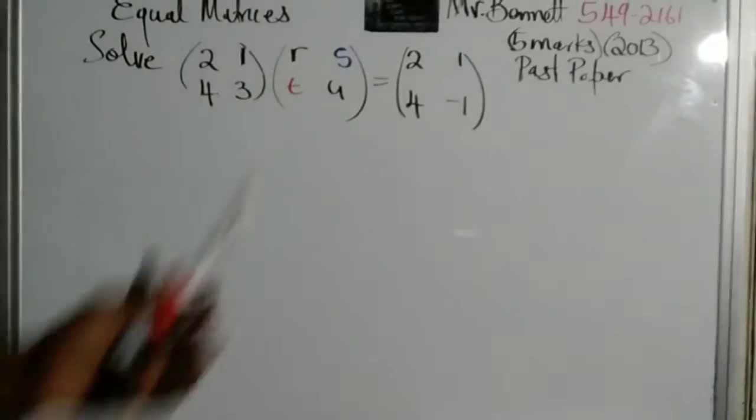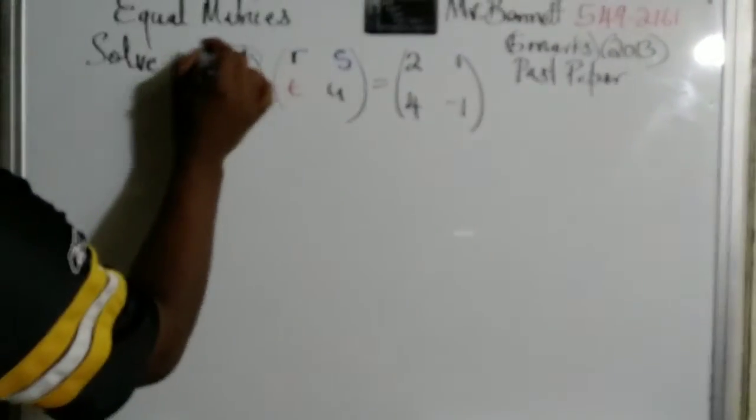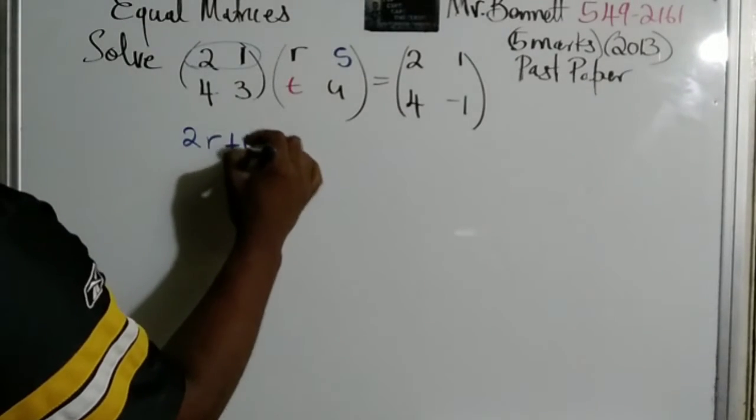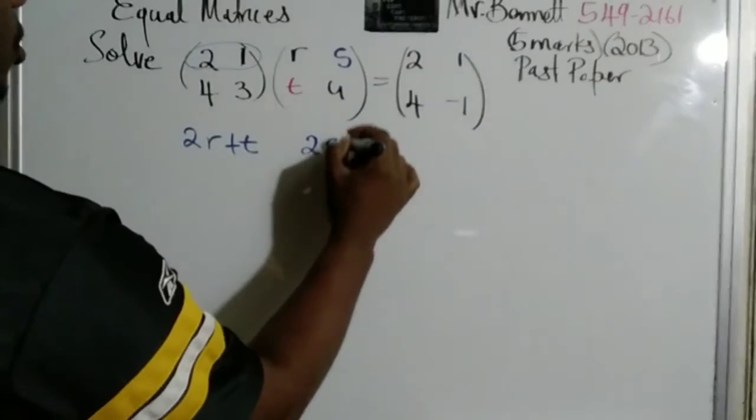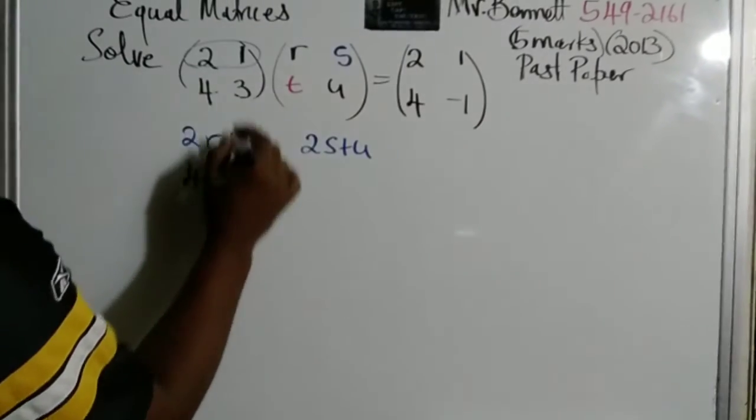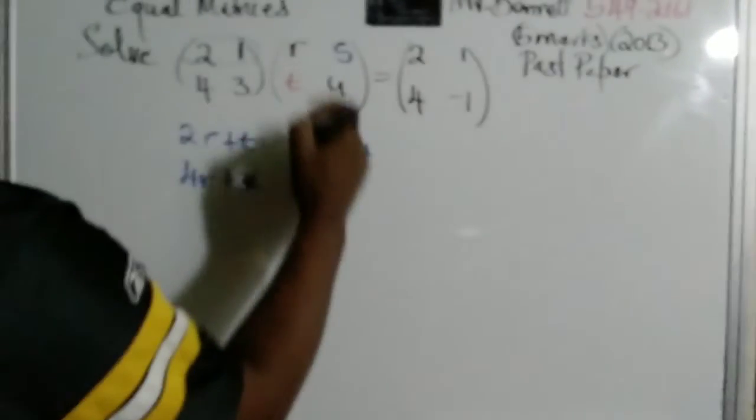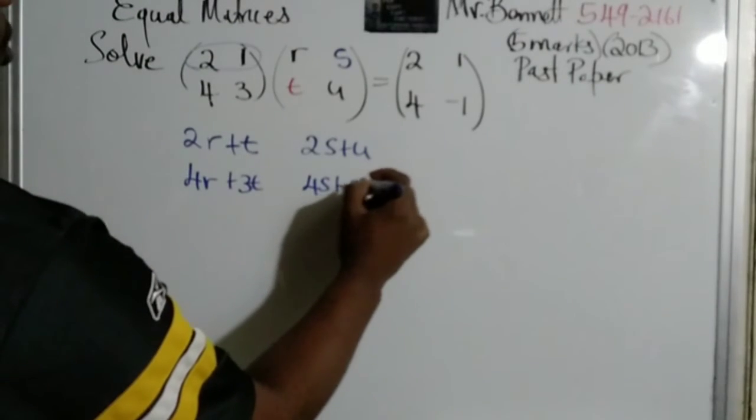Now this means it is multiplied, right? So remember it's row by column. So let's go. So 2 times R would be 2R, 1 plus T would be T. And then 2 times S is 2S, 1 times U would be U. 4 times R is 4R, and 3 times T would be 3T. Now 4 times S is 4S, plus 3 times U is 3U.